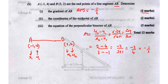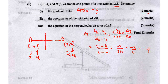Moving on to part 2: the coordinates of the midpoint of AB. Going back to the line segment, the midpoint is right down the middle — think of cutting the line in half. We need to find the coordinates of that midpoint.